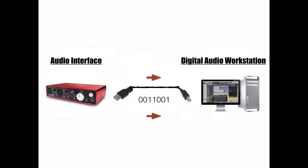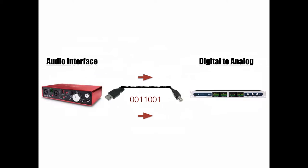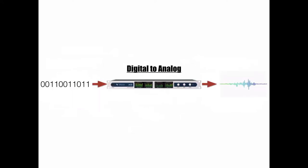This is where your skills come into play as a mix and mastering engineer — you're able to work with the audio and change its characteristics for playback. Once the audio has been edited, mixed, or mastered within the digital audio workstation, it is sent back through the audio interface and re-enters the hardware signal chain. From the audio interface, it is sent through a D to A converter — digital to analog — which converts the binary signal back to a voltage.